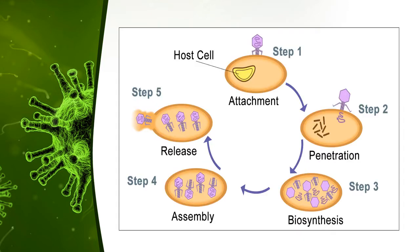Step 1 is attachment: the phage uses tail fibers for attachment to the complementary receptor sites on the bacterial cell wall. Step 2 is penetration: the tail sheath of the phage contracts and the tail core is driven into the bacterial cell wall. The tip of the core reaches the plasma membrane, and the DNA from the phage head passes through the tail core through the plasma membrane and enters the bacterial cell. The capsid remains outside and is referred to as a ghost; the phage particle functions like a hypodermic syringe, injecting its DNA into the bacterial cell.